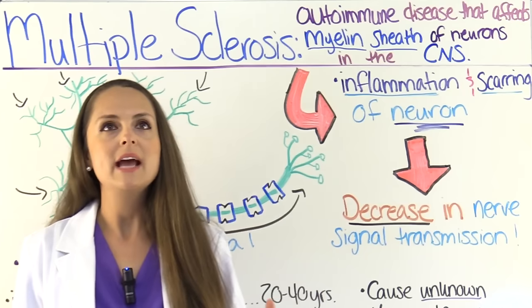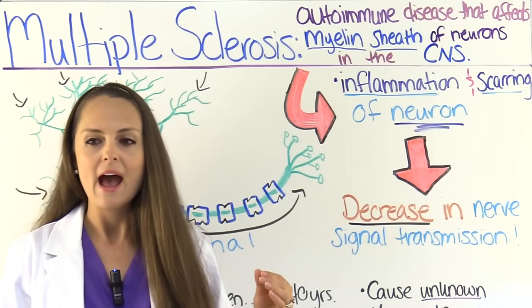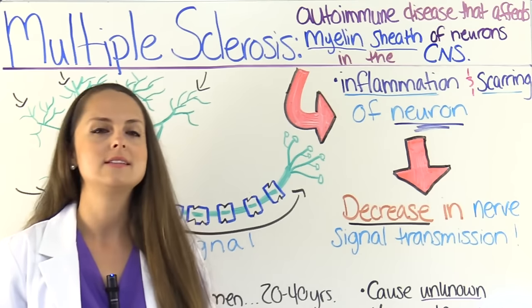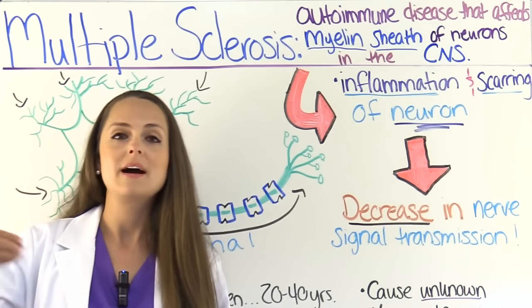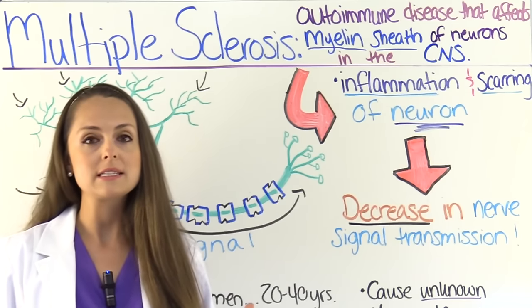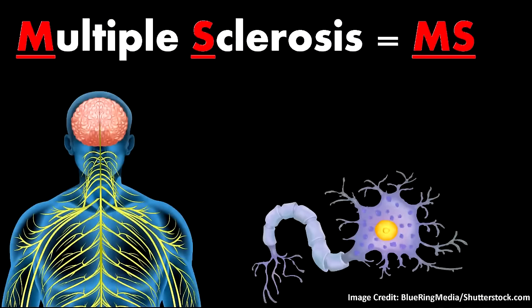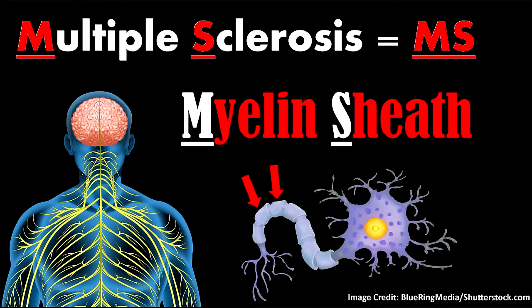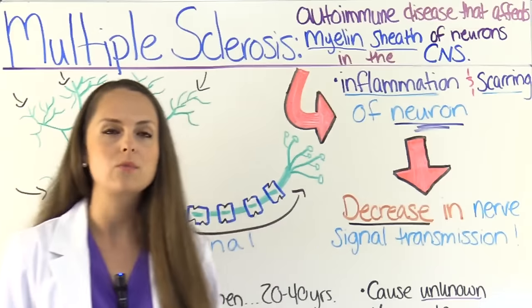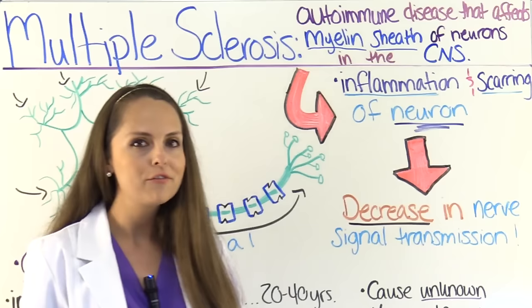In nursing we have to know a lot of different neuro diseases — Parkinson's, multiple sclerosis, myasthenia gravis. To keep them straight, I think of MS standing for myelin sheath, because that's what's being affected in multiple sclerosis. That's how I differentiate it from Parkinson's, where your dopaminergic neurons are being affected.